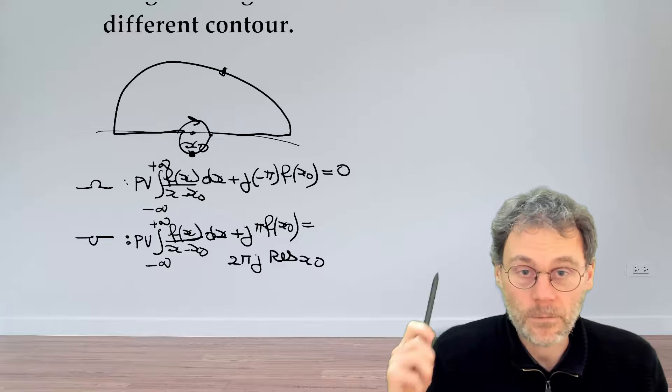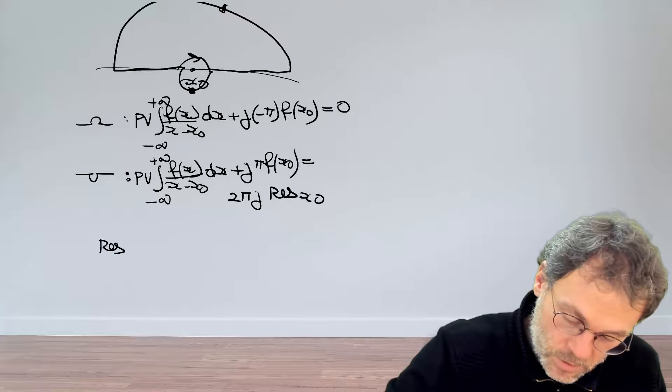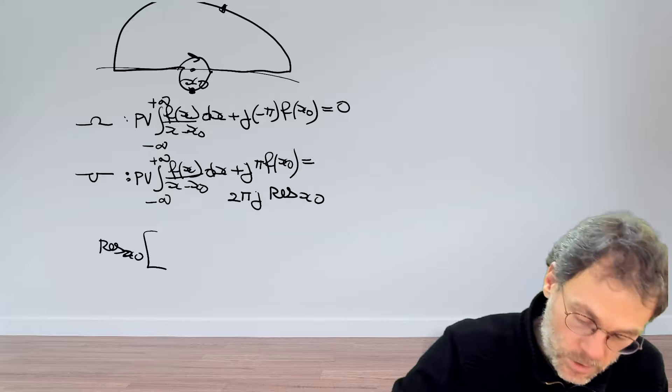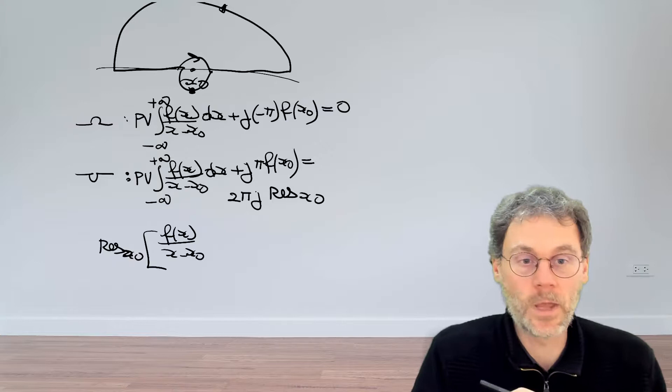And hopefully this will save us. Indeed, let's calculate that residue. The residue at x0, how do we calculate it? We take our integrand, that's f of x over x minus x0, and we should probably consider this as a complex function.